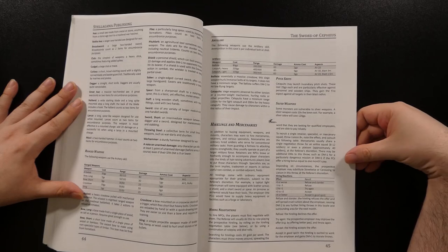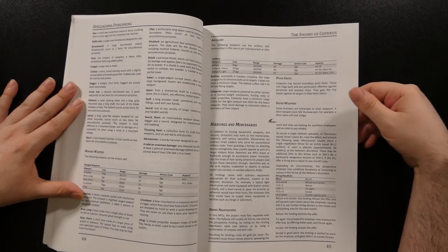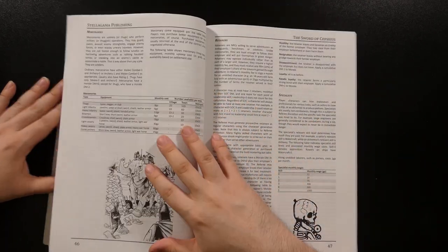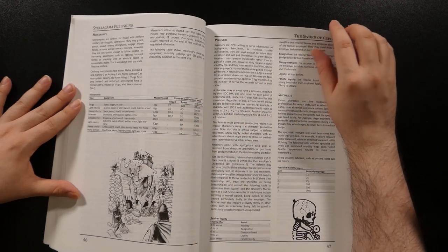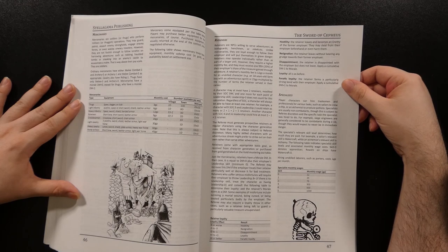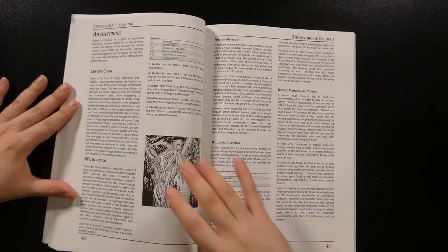Amusingly, there is a section on hirelings and mercenaries, which are treated in a very OSR style, allowing characters to negotiate and attempt to hire various men-at-arms and soldiers to their service. There's an expanded section on retainers, or fully-fledged sub-characters that a character can have accompany them on their adventure, as well as your classic guidelines for hiring other specialists.